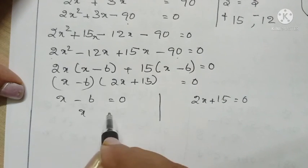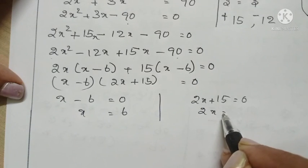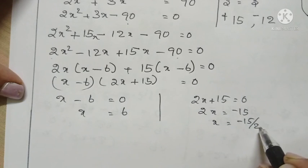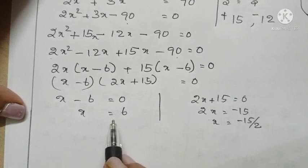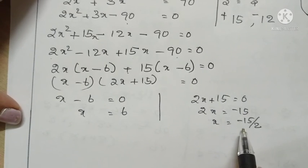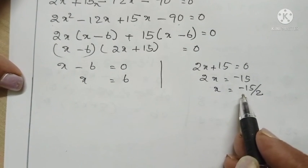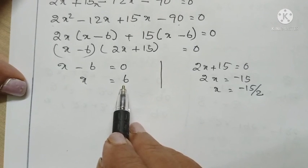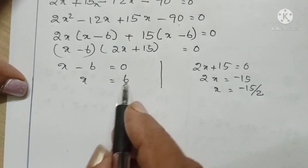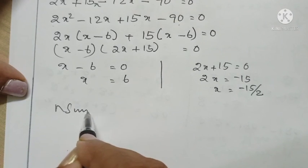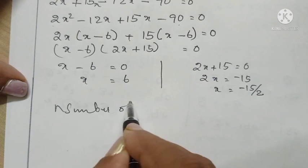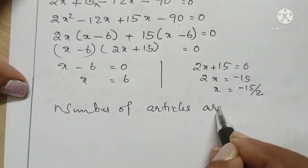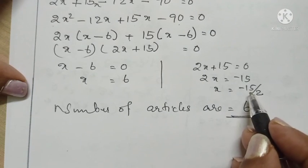So x equals 6, or 2x equals minus 15, giving x equals minus 15 divided by 2. Since the values of x are 6 and minus 15 by 2, and the number of articles can never be a negative number, therefore the number of articles is 6. We do not take the negative value.